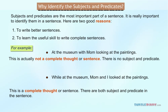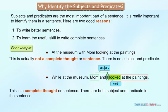First, we can find the verb, which is 'looked.' Then we ask, 'Who was looking?' or 'Who is doing the action?' The answer is 'Mom and I.' So the subject is 'Mom and I,' and the predicate is 'looked at the paintings.'